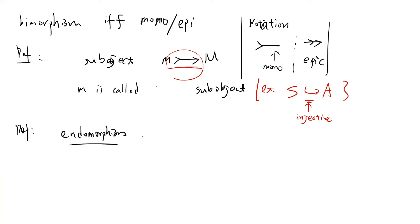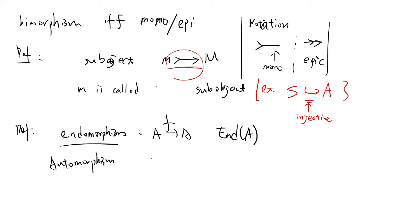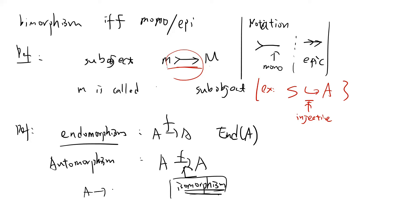Endomorphism means a morphism f from A to A — any morphism from A to itself is called an endomorphism. If you work in a group, there is also a thing called automorphism: a morphism from A to A where the map is an isomorphism — meaning the inverse exists. If you collect all the isomorphisms from A to A, that collection is called Aut(A), the automorphism group.